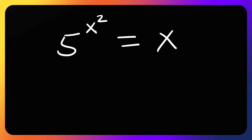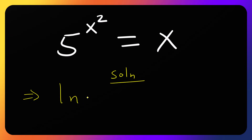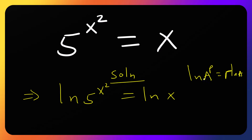Consider 5 raised to x squared equals x. How do you solve for x? Let's take the natural log of both sides to bring the power down. So we have ln of 5 raised to x squared equals ln of x. Using the property ln(a^p) = p·ln(a), the left side becomes x squared times ln 5, equals ln of x.